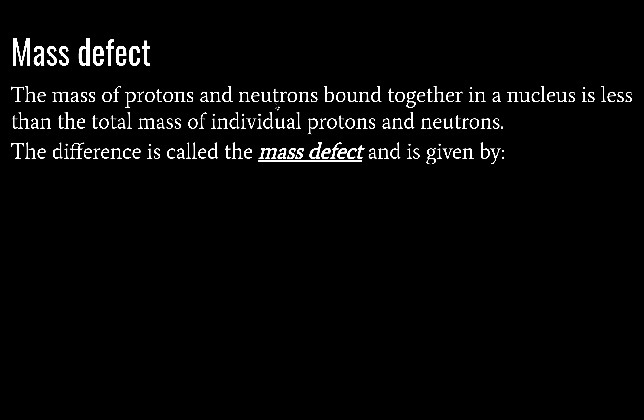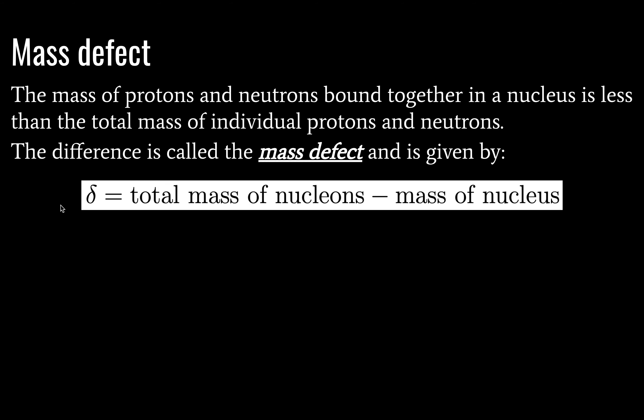The answer to this question is interesting. The mass of protons and neutrons bound together in a nucleus is generally or always less than the total mass of individual protons and neutrons. The difference is called the mass defect, and it is given by this value. Delta is equal to the total mass of nucleons minus the mass of the nucleus. So what's happened is some of our mass is converted into energy, and this energy is called the binding energy of the nucleus. You might be asking yourself, how can mass become energy?